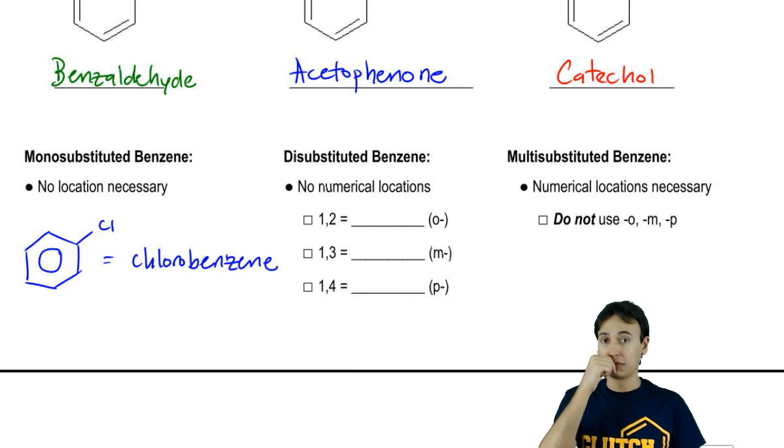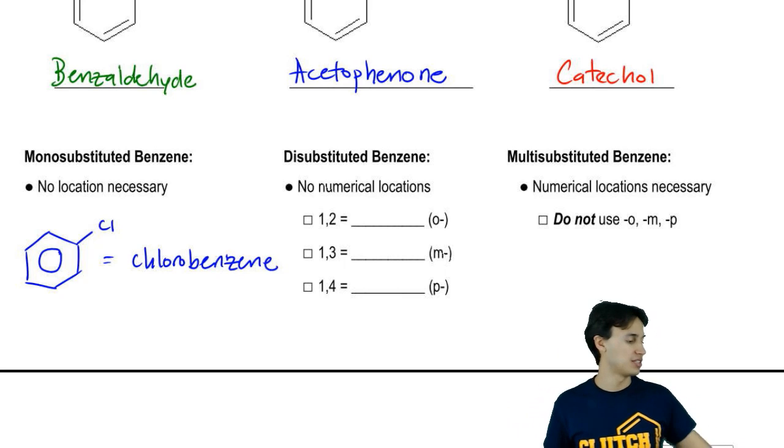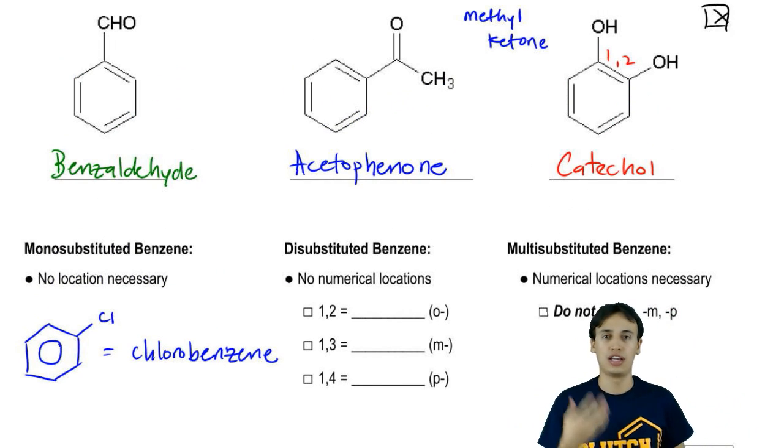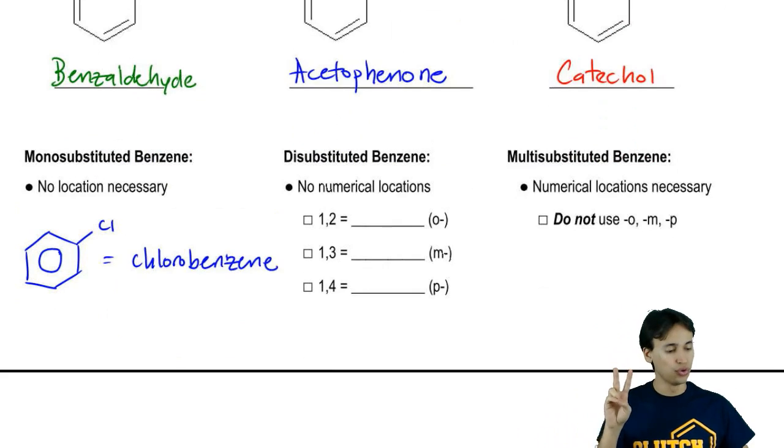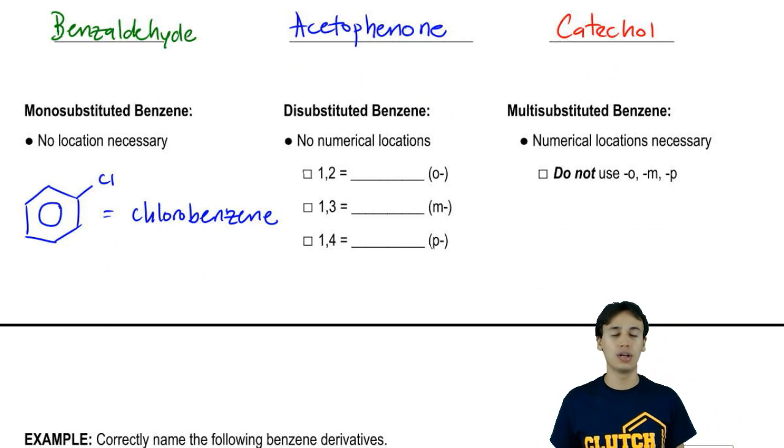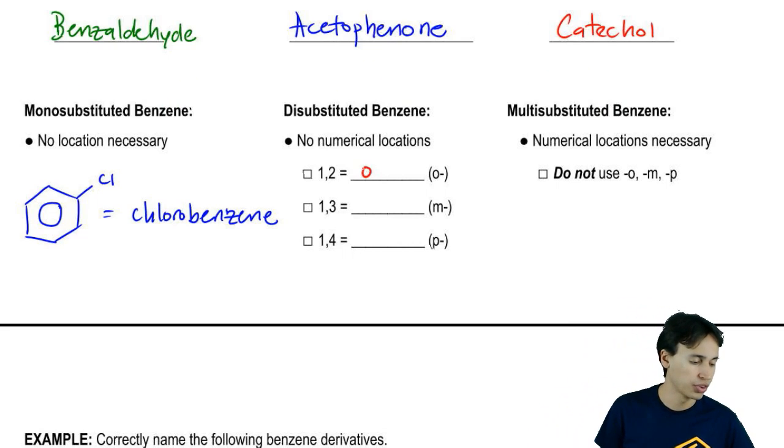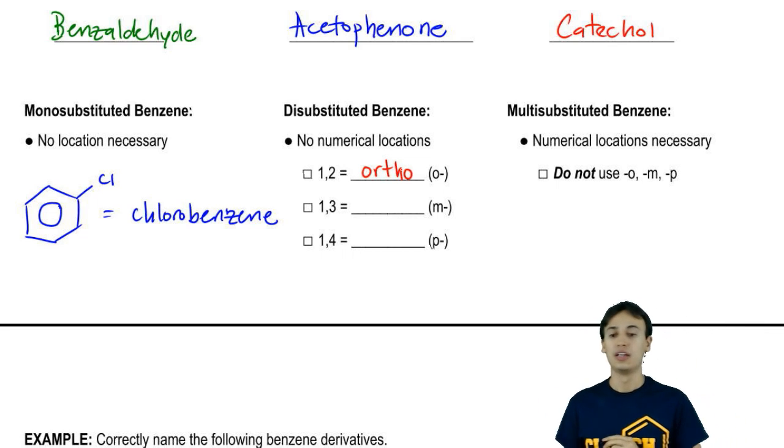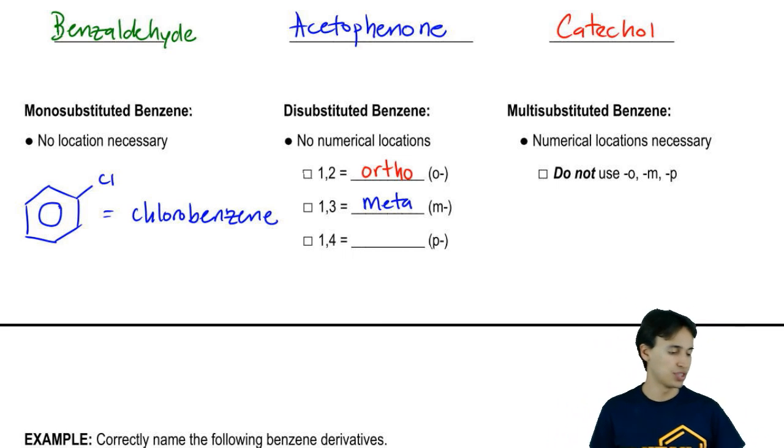What if you have a disubstituted benzene like I just mentioned, two hydroxyl groups? In that case, we don't use numbers. If you only have two, we're going to use letter locations. So instead of being called 1,2, we actually call that ortho. Instead of 1,3, we're going to use the word meta. And instead of 1,4, we're going to use the word para.